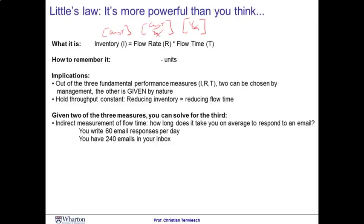The second thing we do with Little's Law is that oftentimes we might know two of the performance measures in a process, but it's hard to observe the third one. Little's Law can help us compute the third measure from the two known ones. Typically in a process, flow rate and inventory are relatively easy to observe. Flow time, in contrast, is not. Let me give you an example.